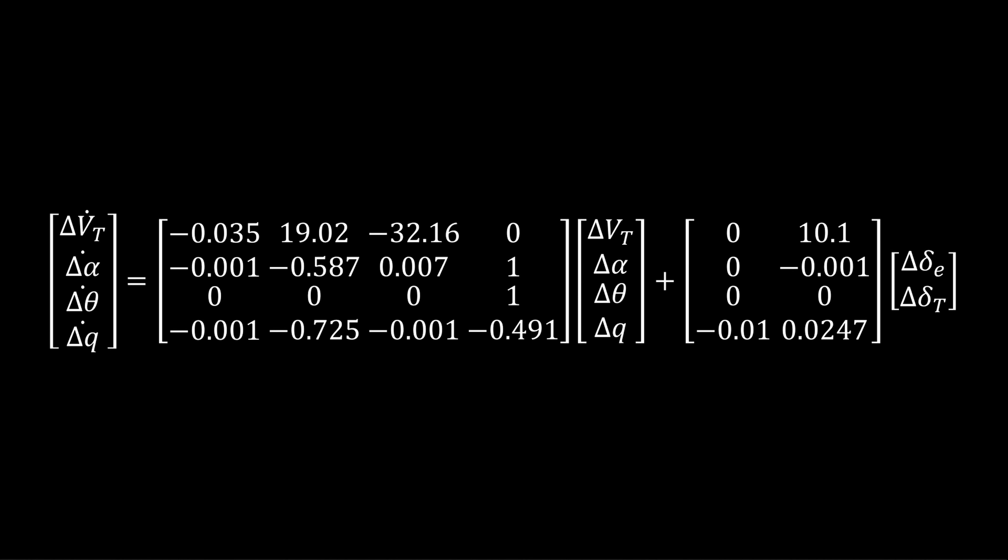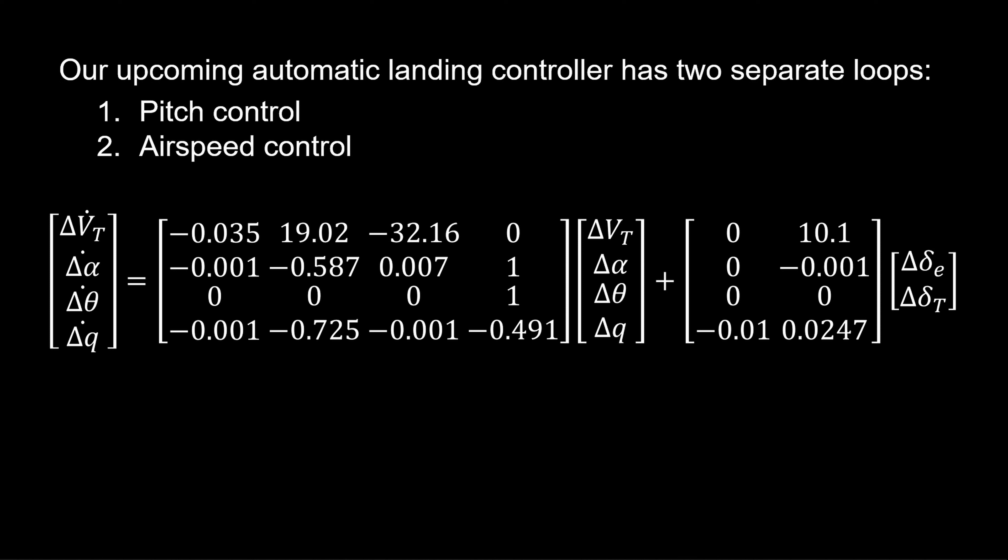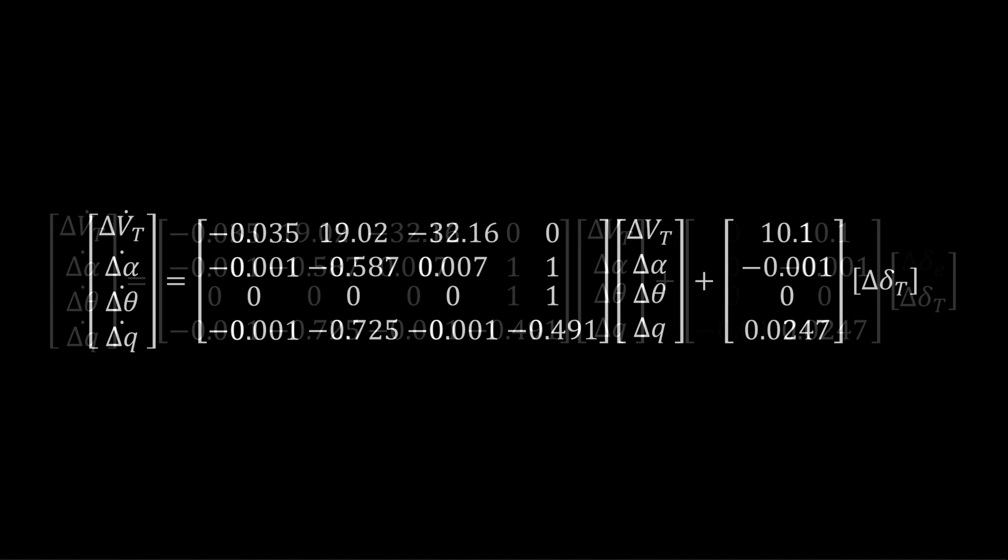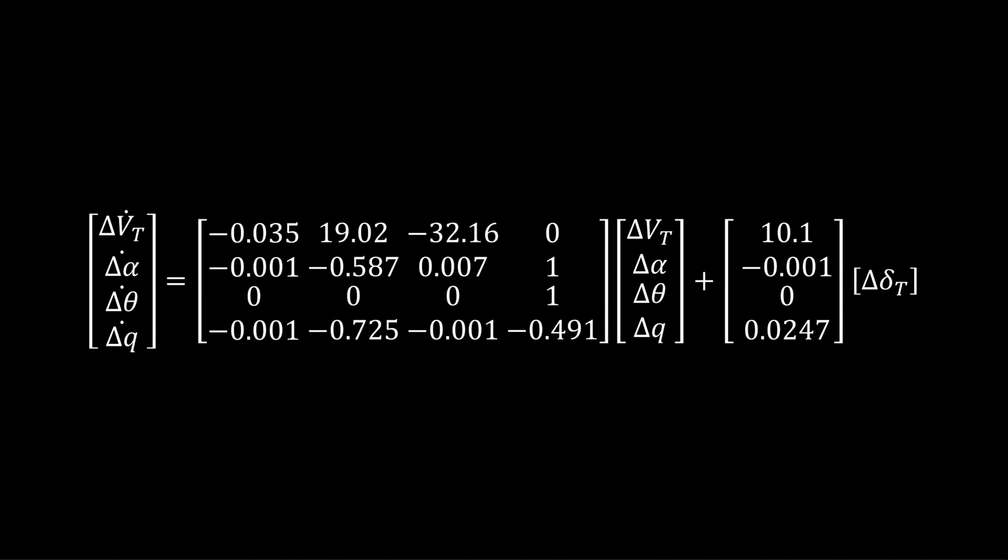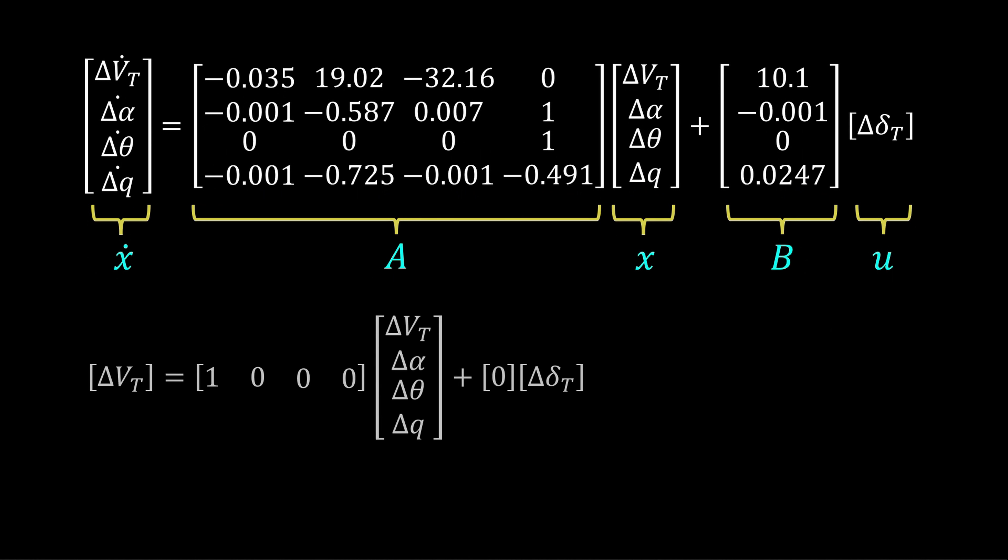Linearizing gives this LTI model about that trim state. Now, in the previous lesson, we used these dynamics to develop the pitch control system. Here, we focus on airspeed control. And for this, our primary control input is to use the throttle channel. So this reduces the B matrix to a single column. And then for the rest of the system, we have to produce airspeed. So we select the C and D matrices to output airspeed from the state.